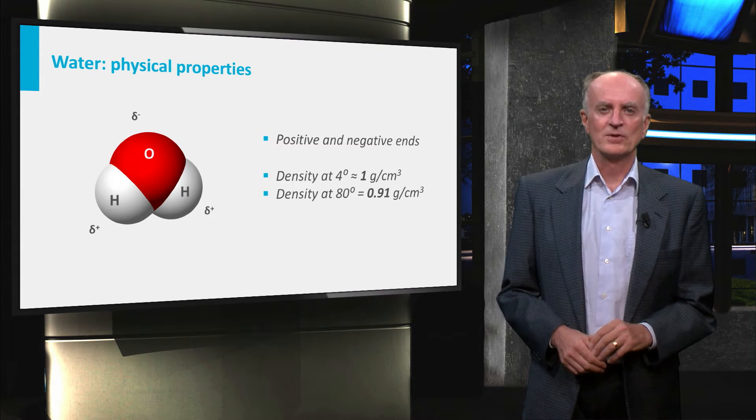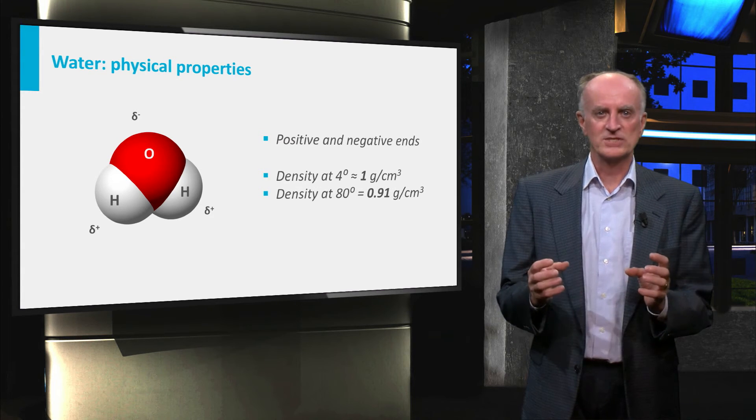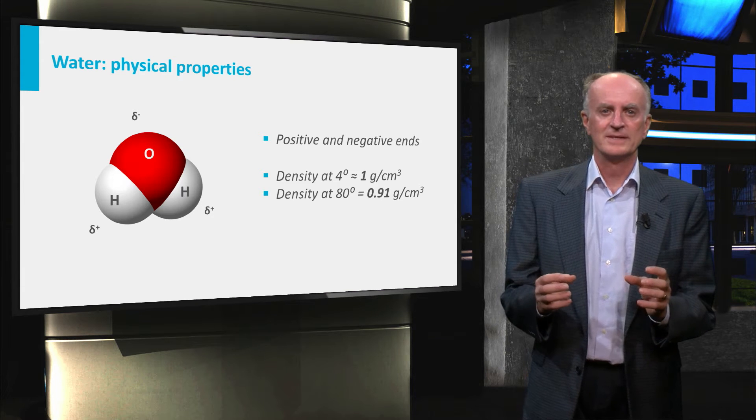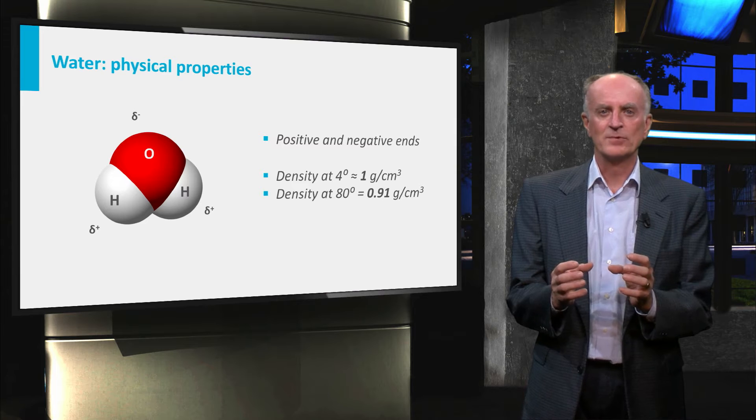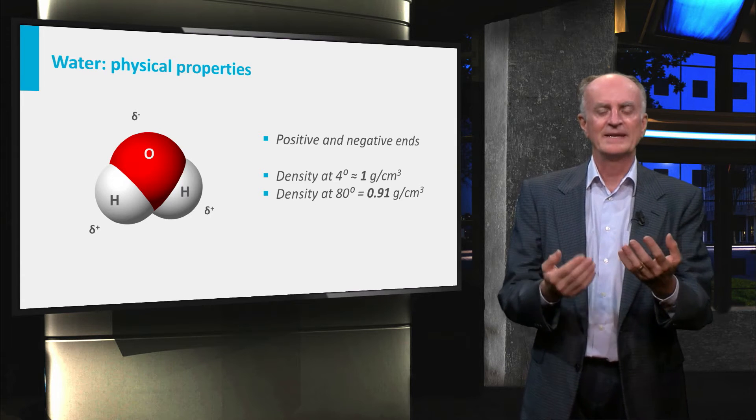This is what a water molecule looks like. You clearly see the oxygen and the hydrogen atoms. You also see that as a consequence of their asymmetrical arrangement, the water molecule has a positive and a negative end.